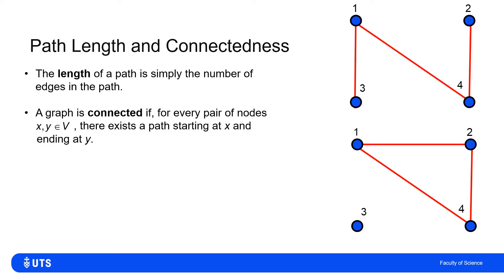We can also define a graph as being connected if for every pair of nodes x and y there is a path from x ending at y. In the top graph, that's fully connected — every node can access every other. The lower graph is not connected because, although the subgraph containing nodes one, two, and four is connected, node three is disconnected — there is no path from three to one, or from four to three.